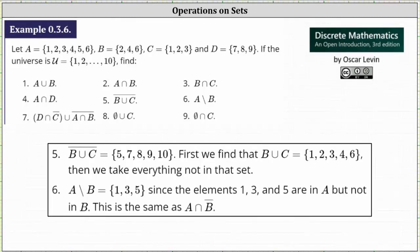Number five, we have the complement of B union C. Let's first find B union C, which are the elements that are in set B or set C or in both. Analyzing set B and set C, the elements in B union C are 1, 2, 3, 4, and 6. To find the complement of B union C, we need to find the elements in the universal set that are not in B union C.